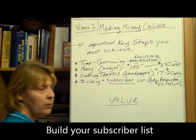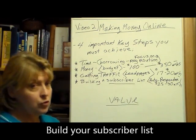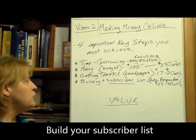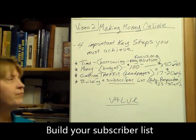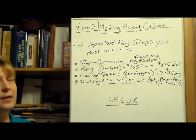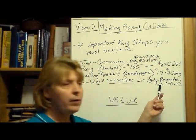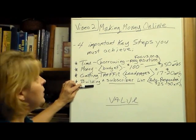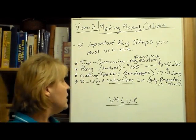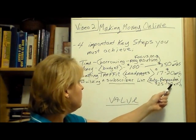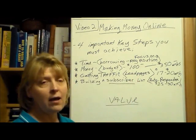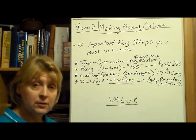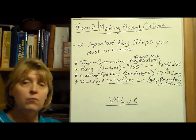Now you have to build your subscriber list. In order to do that you must have an autoresponder. GVO is one, Aweber is another — there are many of them — and most of them will charge you about $25 to $30 a month. So now we've got these four key components, and we're spending about $50 a month plus the hundred dollars for our advertising budget a month.